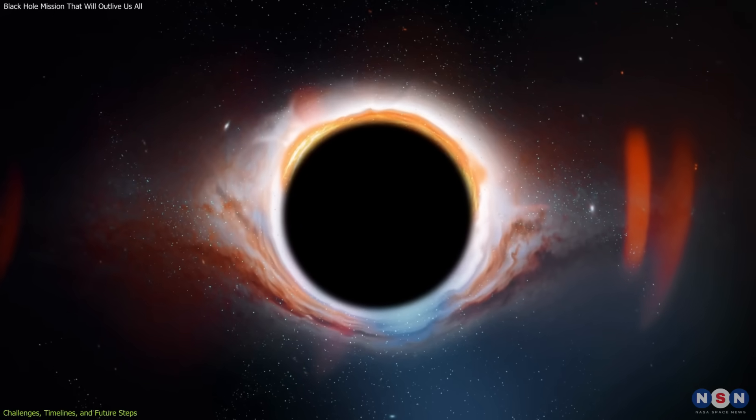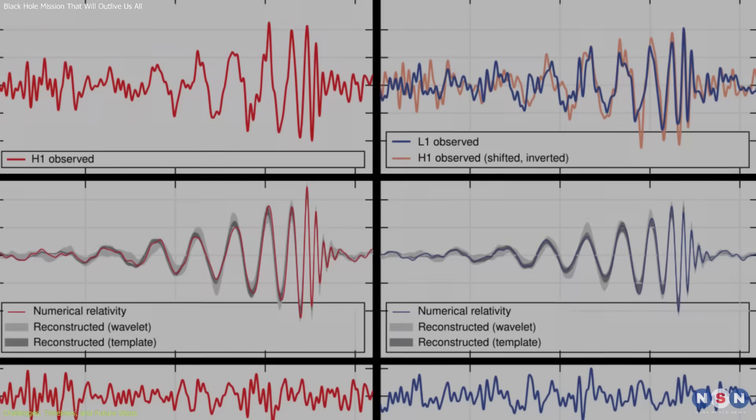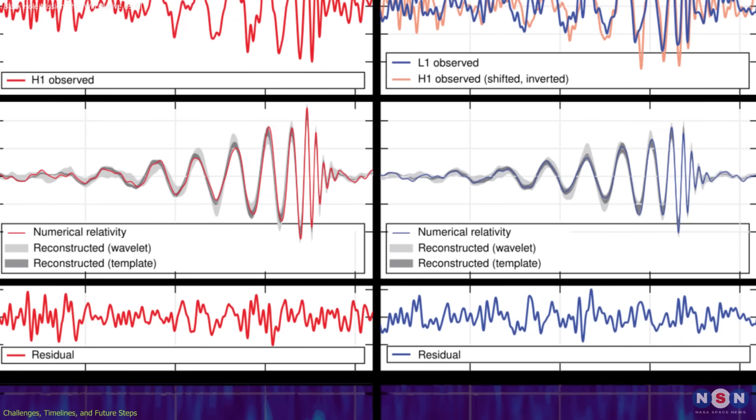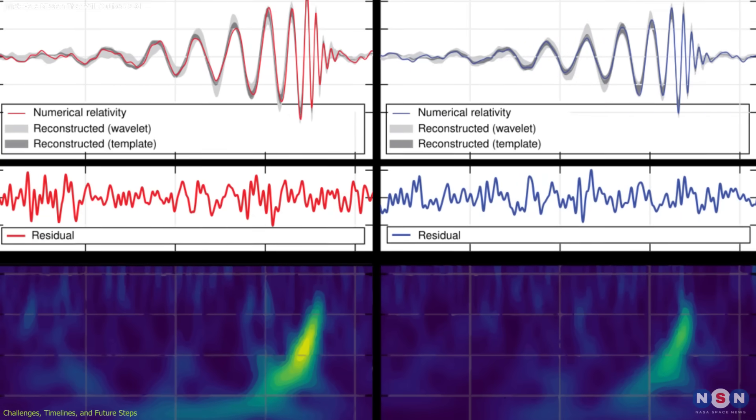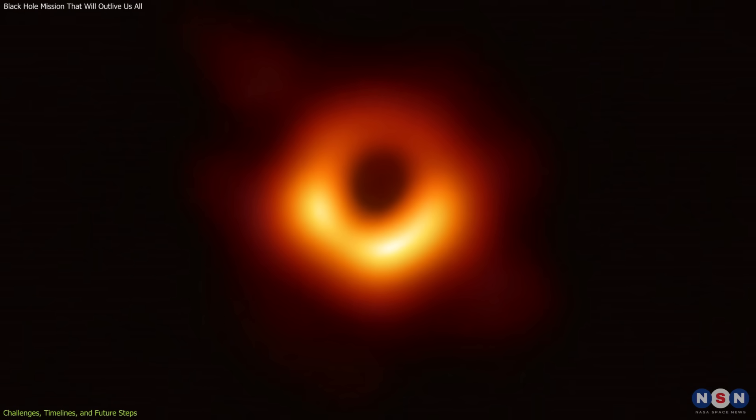History shows persistence pays off. Gravitational waves predicted in 1916 were detected in 2015, and it took over 50 years to capture the first black hole image in 2019.